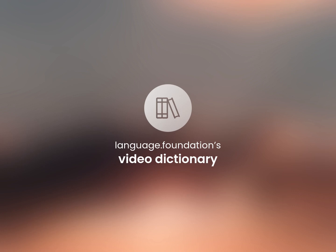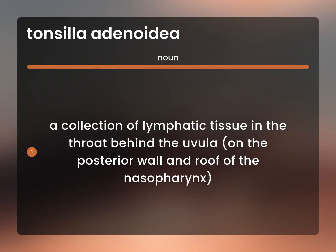Language.Foundation's Video Dictionary, helping you achieve understanding. A collection of lymphatic tissue in the throat behind the uvula, on the posterior wall and roof of the nasopharynx.